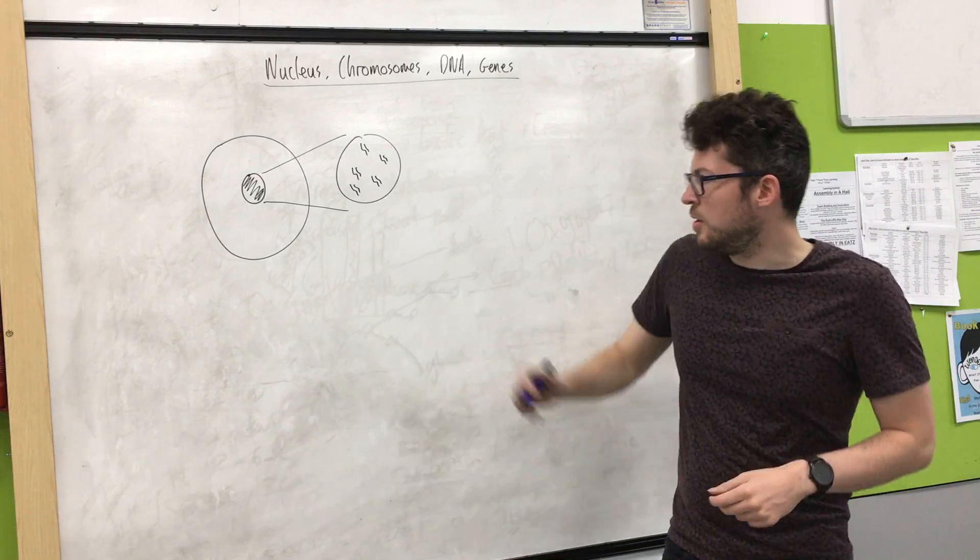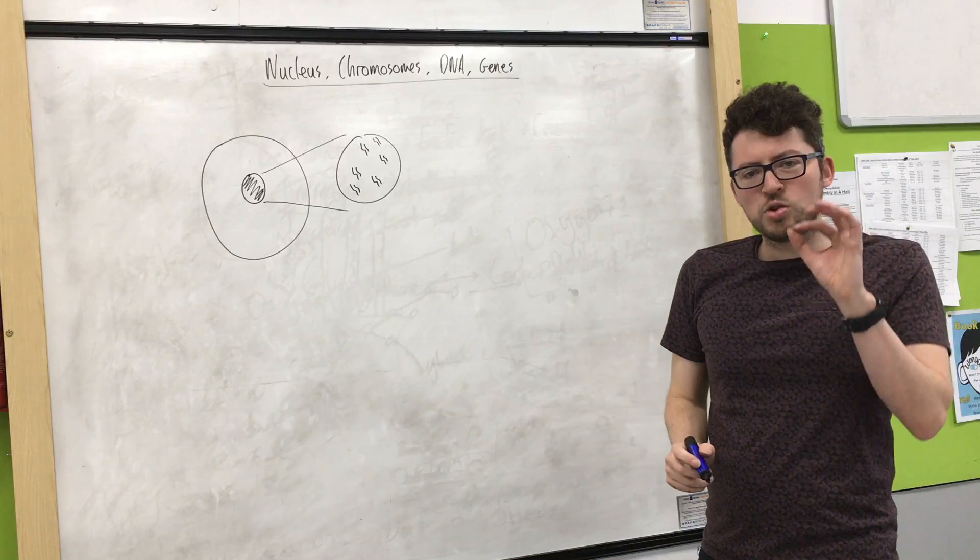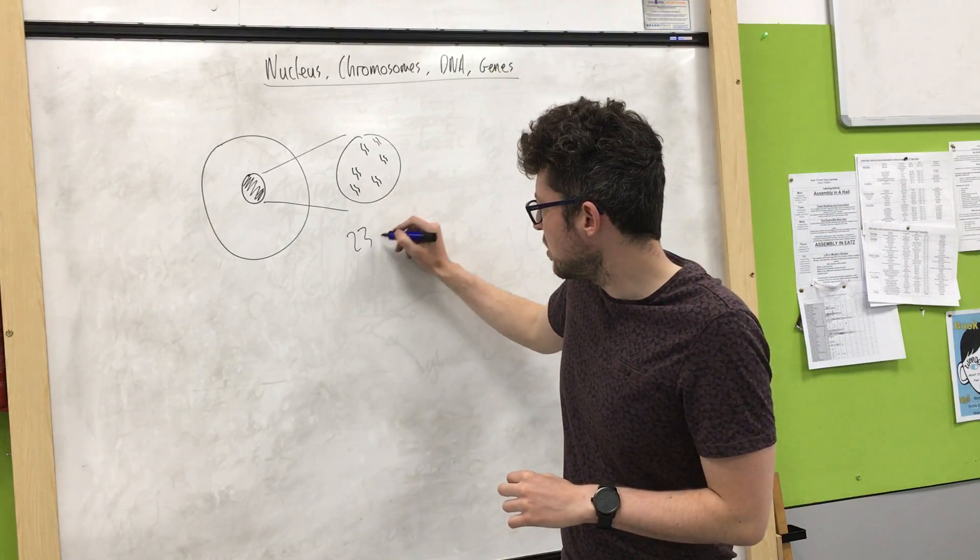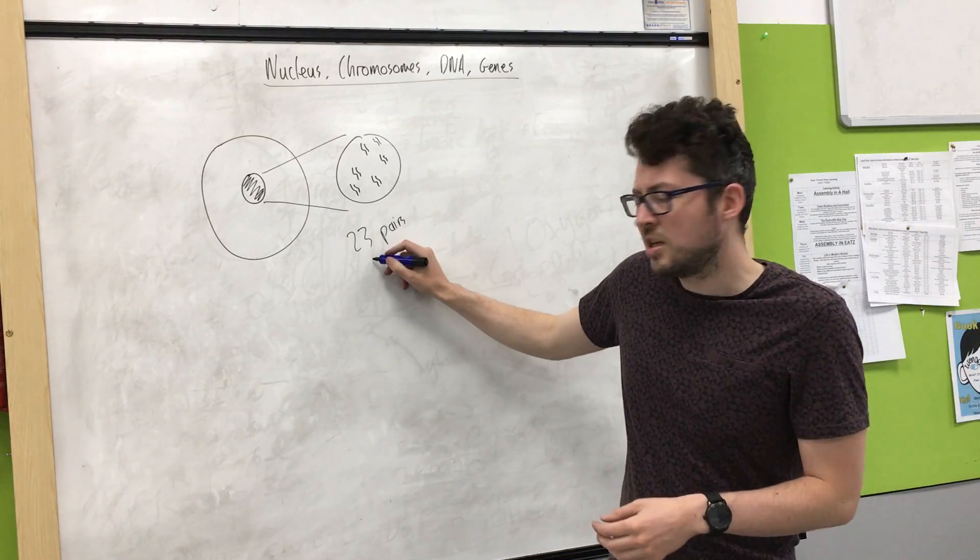So these are our chromosomes, and they're normally paired up. In humans, we have 23 pairs. So that means we have 46 in total.